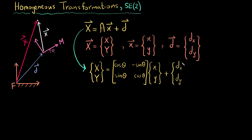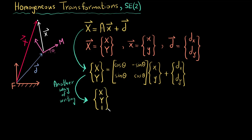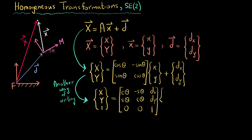Now I can write the same equation in another way — we will talk about why later. The first vector is (x, y, 1), then there is a 3×3 matrix with two zeros in the bottom row and a 1, and the rightmost vector is (x, y, 1). This 3×3 matrix is called the homogeneous transformation matrix, and I can write the same equation in a more concise form.